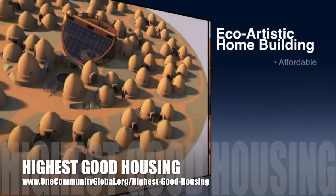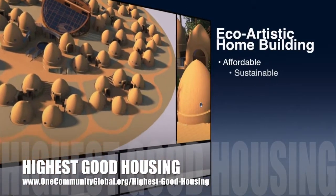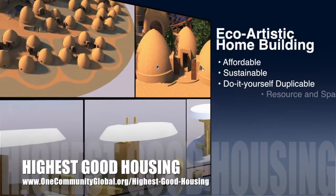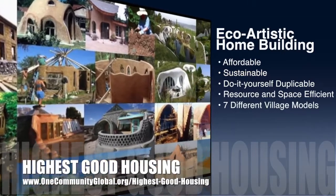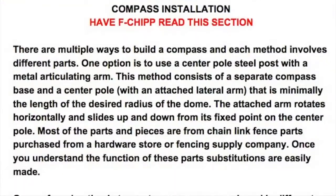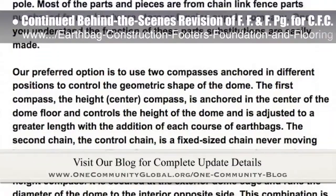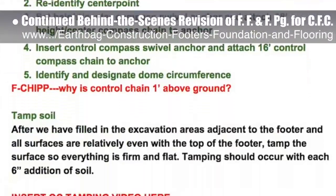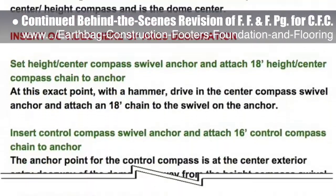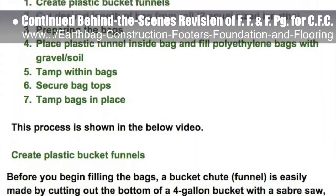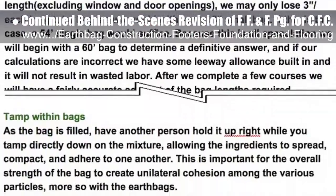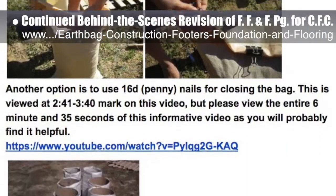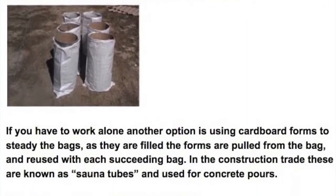OneCommunity's approach to highest good housing is eco-artistic home building that is affordable, sustainable, do-it-yourself duplicable, resource and space efficient, and consists of seven different sustainably constructed village models. This last week, the core team put another 10 hours into the behind-the-scenes revision for the footers, foundations, and flooring page for our crowdfunding campaign. This week's focus was reviewing, editing, and inserting title steps for Section 8, Compass Installation, and Section 9, Bag Preparation and Filling, including additional narrative added to Section 9. We are now 70% complete with this total update and rewrite.